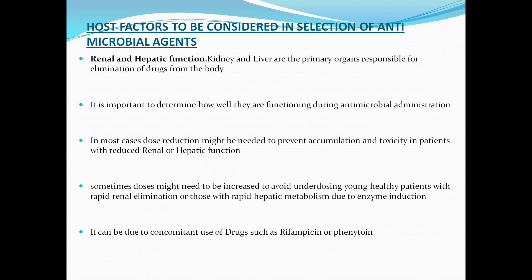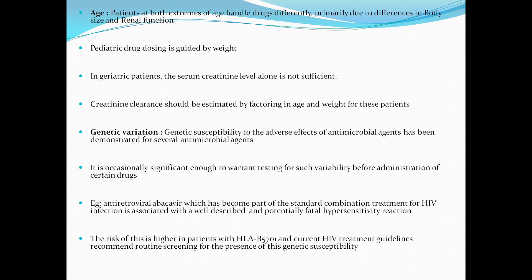Next, host factors to be considered in selection of antimicrobial agents. We need to consider renal and hepatic function. The kidney and liver are the primary organs responsible for elimination of drugs from the body, so it is important to determine how well they are functioning during antimicrobial administration. In most cases, dose reduction might be needed to prevent accumulation and toxicity in patients with reduced renal or hepatic function. Sometimes the dose might need to be increased to avoid underdosing in young healthy individuals, including due to concomitant use of drugs such as rifampicin or phenytoin. Regarding age: patients at both extremes of age should be managed with caution. Pediatric drug dosing is guided by weight; in geriatric patients, serum creatinine level should be checked and creatinine clearance factored in using age and weight.